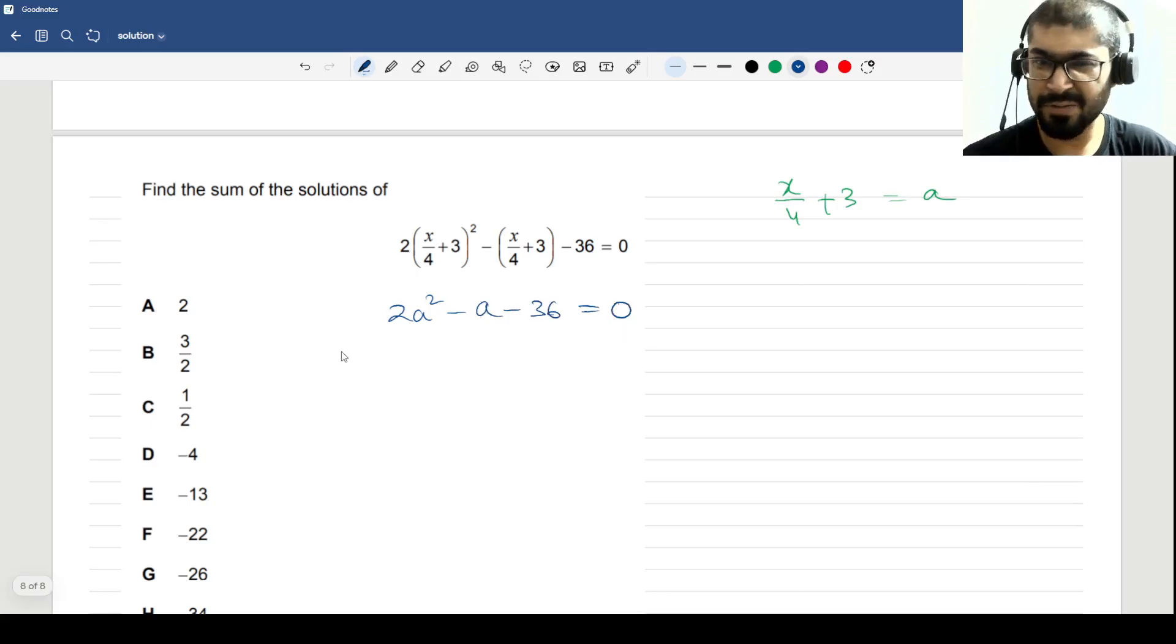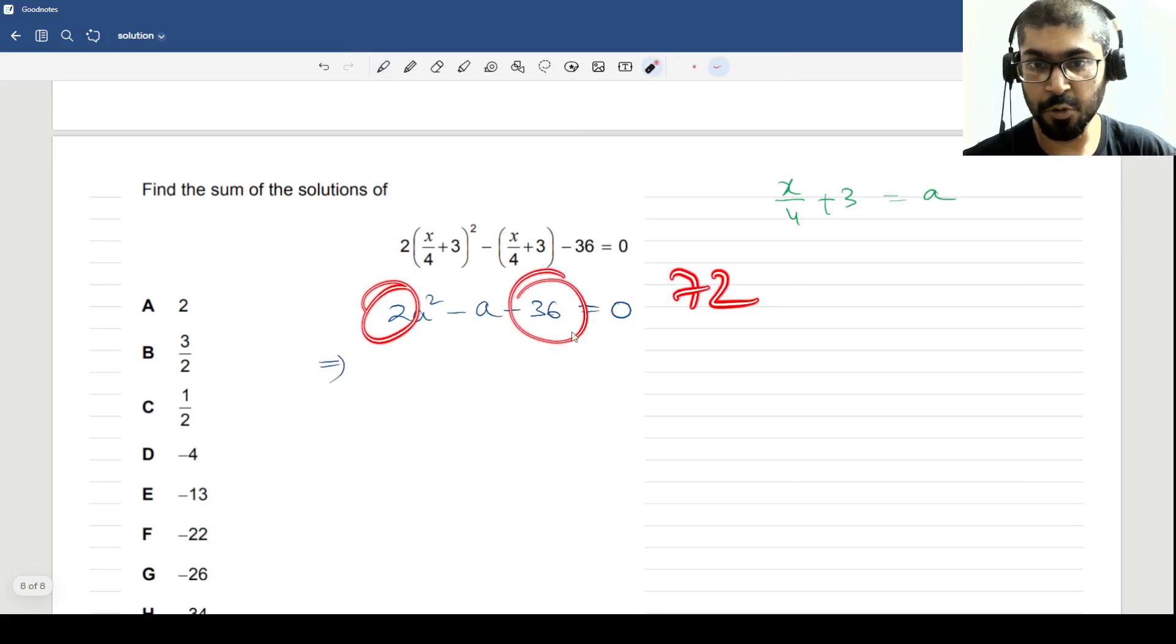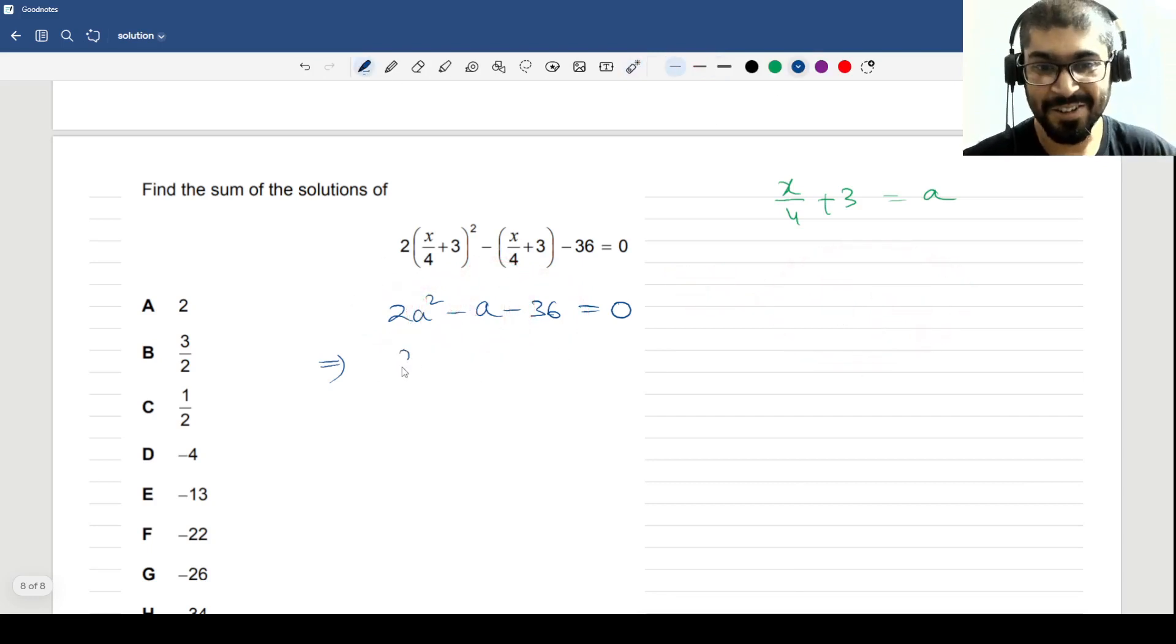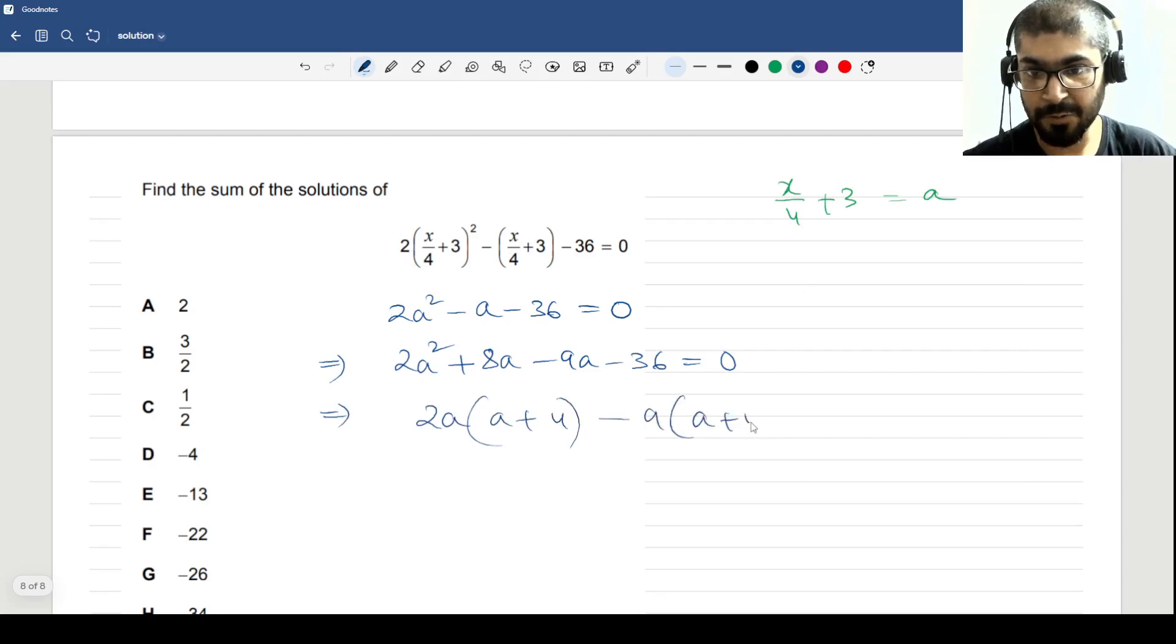I told you in a previous video that you have to be very fast in middle term factorization. I'll show you how fast: 2 × 36 is 72, and to get 72 into a factor of 1, I'll do 8 × 9. This is the first time I'm solving this problem, honestly. So 2a² + 8a - 9a - 36 = 0. Then a + 4 minus 9 into a + 4 is equal to 0, giving you (2a - 9)(a + 4) = 0. That means a = 9/2 and a = -4.